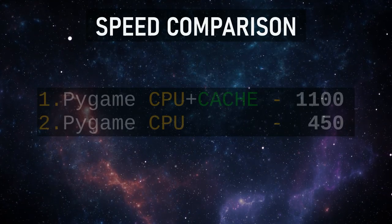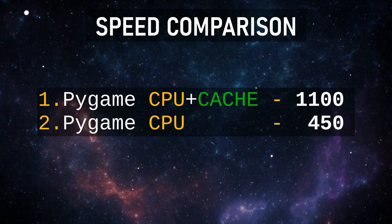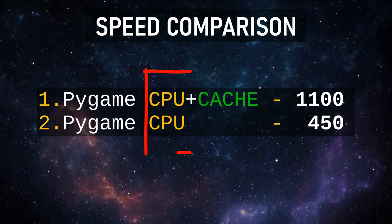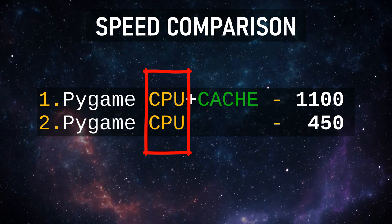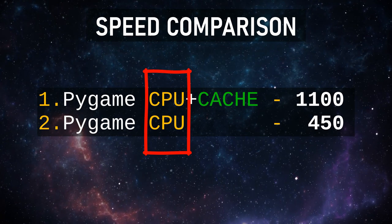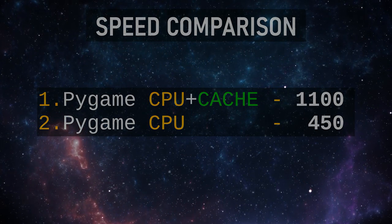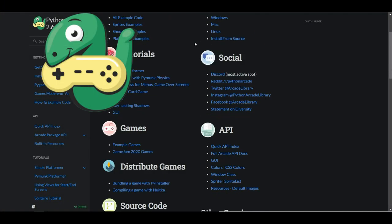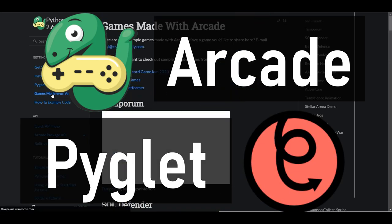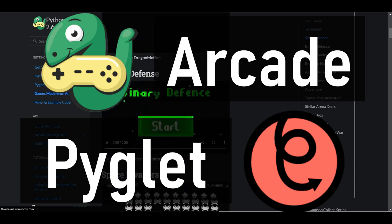So far only PyGame has participated in our comparison, giving two results — CPU and CPU with cache — with a GPU test noted for later. Now let's move to the next library: Arcade. This library is built on top of the lower-level Pyglet library, which uses OpenGL for graphics rendering. Arcade and Pyglet are likely comparable in speed to each other.